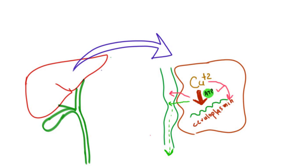The copper which is excreted in the bile is always bound to its transport protein called ceruloplasmin. So the copper is never free — it is always bound to ceruloplasmin.